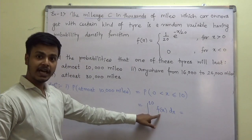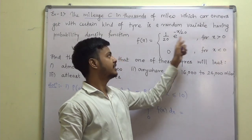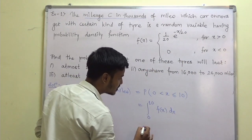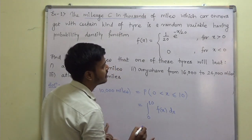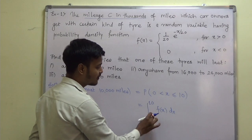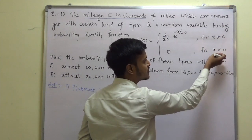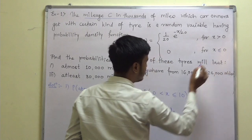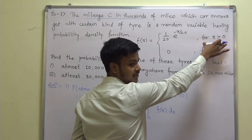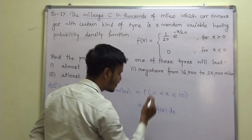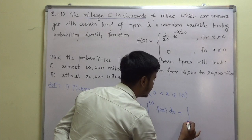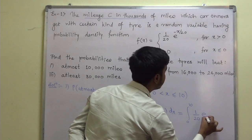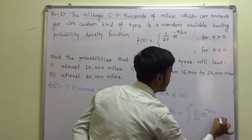From 0 to 10, we have two pieces for f(x): one for less than 0 and one for greater than 0. The interval 0 to 10 falls under the condition for x ≥ 0. So we can directly write the integration from 0 to 10, where f(x) = (1/20) e^(−x/20) dx.